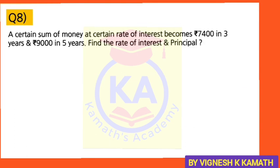Now let's see the 8th question — this is one of the trickiest questions. If you follow my workings carefully you will get the hang of it. A certain sum of money at a certain rate of interest becomes Rs. 7,400 in 3 years and Rs. 9,000 in 5 years. Find the rate of interest and principal. In the first part: principal P is unknown, rate of interest is also unknown. After 3 years the amount becomes 7,400 — so A₁ = 7,400 and N₁ = 3.